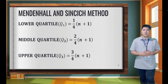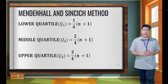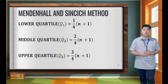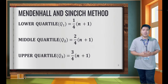Using the Mendenhall and Sincich method, we have three formulas. For the lower quartile or Q1: 1/4 times (N+1). For the middle quartile or Q2: 2/4 times (N+1). For the upper quartile or Q3: 3/4 times (N+1). Take note of those three formulas.